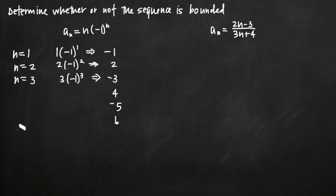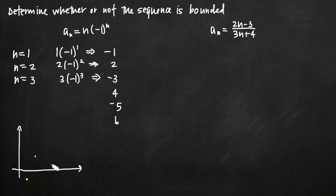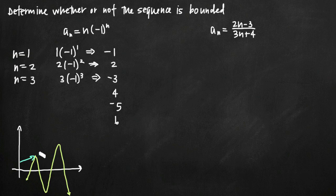If we graph this on an x-y coordinate plane — we don't have to be extremely accurate — at n equals 1 we get negative 1, at n equals 2 we get positive 2, at n equals 3 we get negative 3. Connecting these dots, the highest values the sequence attains keep increasing, while the lowest values continue to get more and more negative as we take larger and larger values of n.